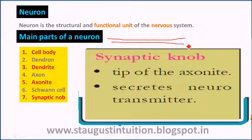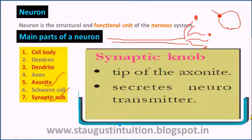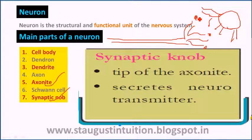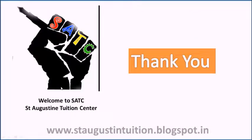The axon terminal releases a neurotransmitter. This signal passes to the next neuron via the dendron. There is a gap — a synapse — and a chemical substance fills that gap. If you have that chemical substance, it answers the signal to the dendrite. This is how the signal travels from neuron to neuron. Thank you — please visit the next part.